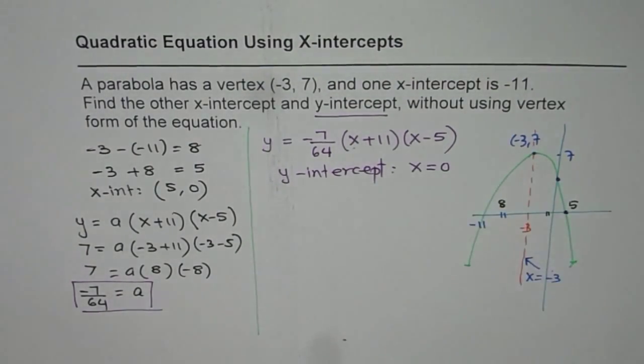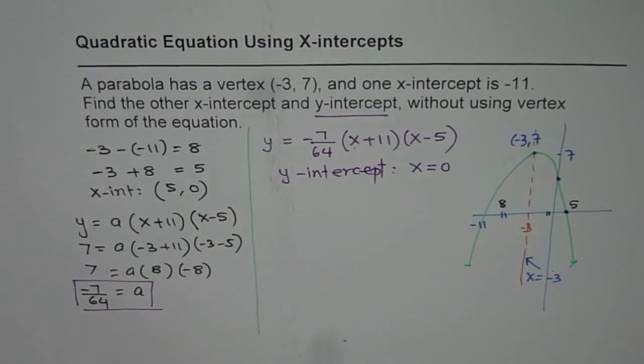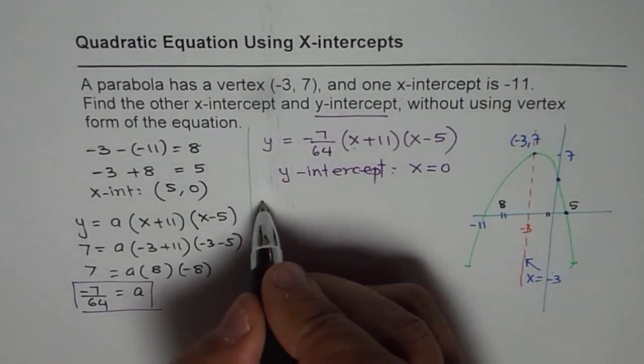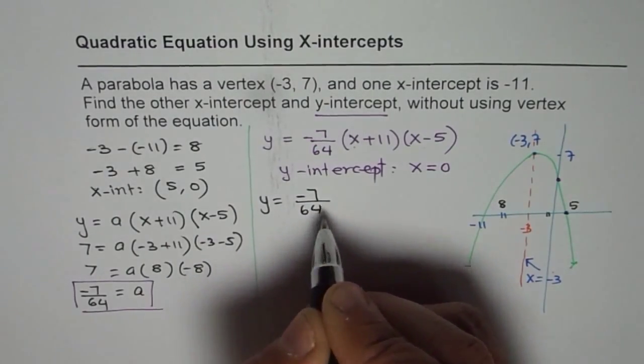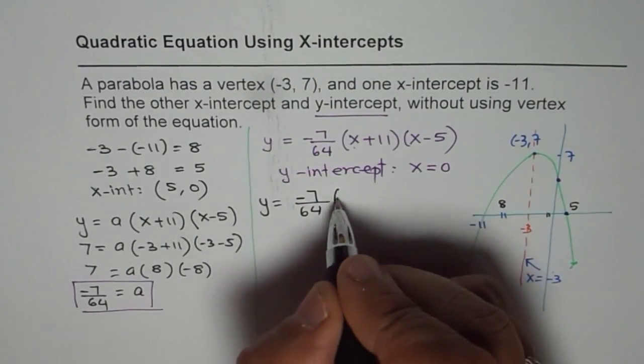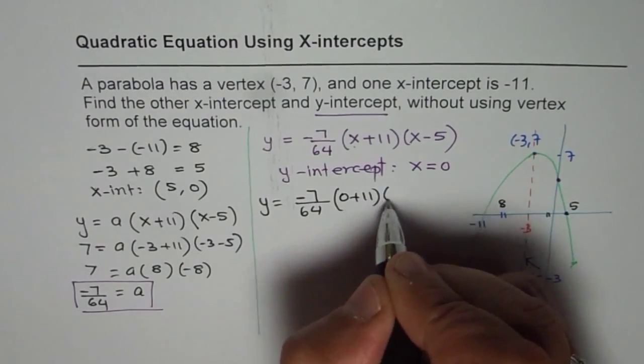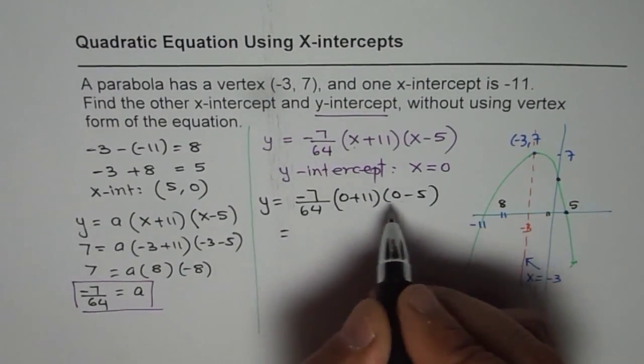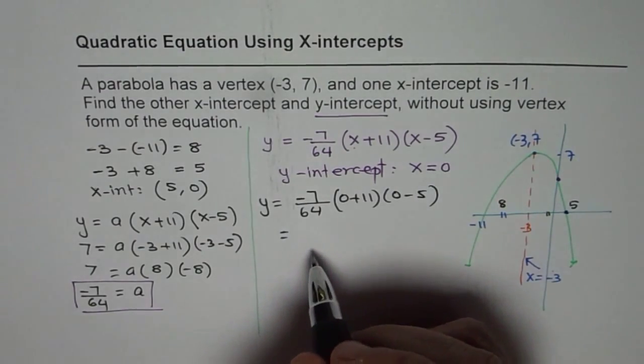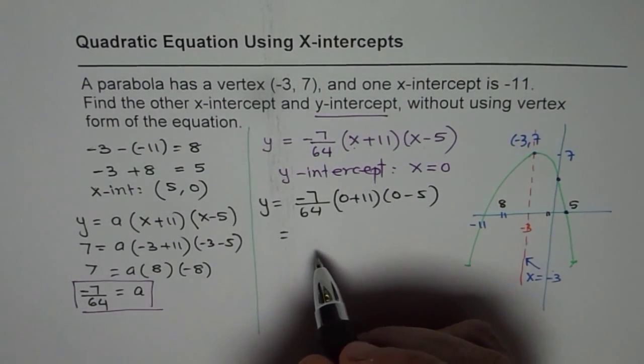So we'll substitute 0 for x, and then calculate the value for y-intercept. So we get y equals to -7 over 64, and if I write 0 here, I get 0 plus 11 times 0 minus 5. And now we can use calculator and calculate the right answer, correct? So, okay, let me get the calculator.